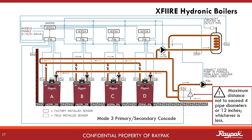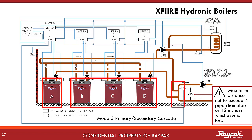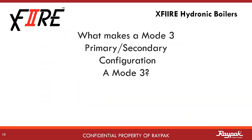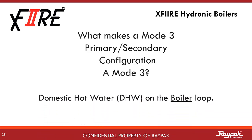Mode 3 can also be run in cascade. Here the A boiler is the master boiler and the others are followers. The decoupler supports the whole cascade. As with all boiler cascade systems, reverse-return plumbing logic applies. It's a Mode 3 because the indirect domestic hot water tank is out on the boiler loop. So what makes a Mode 3 a Mode 3? It must be plumbed primary-secondary and it must have an indirect domestic hot water system on the boiler loop.